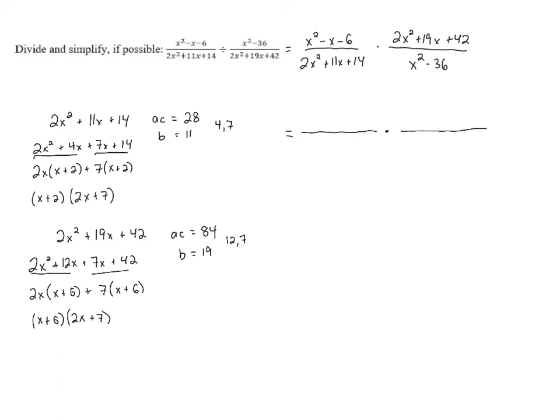The first one that we did, 2x squared plus 11x plus 14, is going to be x plus 2 times 2x plus 7. And then the other one up in the numerator, 2x squared plus 19x plus 42, is x plus 6 times 2x plus 7. I already see something that's going to cancel, but let's factor those other polynomials first, so we can do all the canceling together.